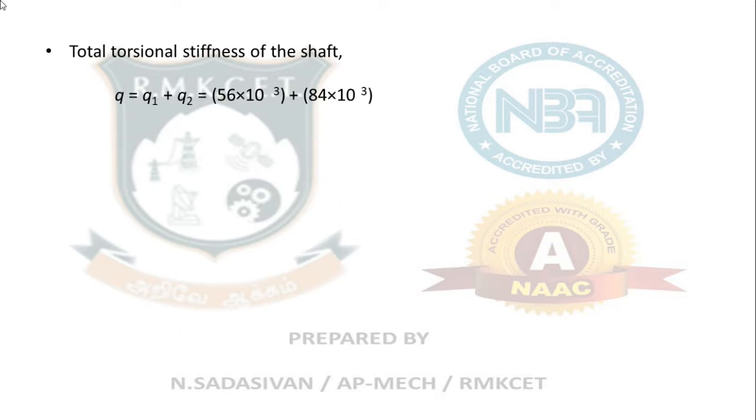Total torsional stiffness q = q₁ + q₂. Add the two, we will get around 140 × 10³ N·m.